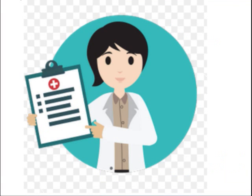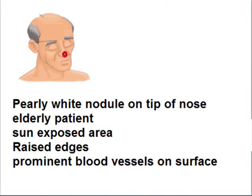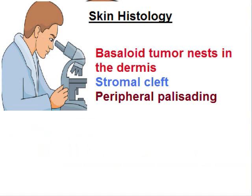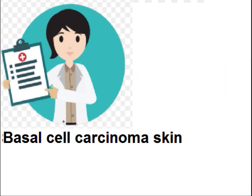The provisional diagnosis, keeping in view the patient history, includes the following positive points: parallel alignment of cells; pearly white nodule on the tip of the nose; elderly patient; sun-exposed area of the face; raised edges of the nodule; and prominent blood vessels on the surface. On microscopy: basal-type tumor nests in the dermis, presence of stromal cleft, and peripheral palisading of tumor cells. The diagnosis was made as basal cell carcinoma of the skin.